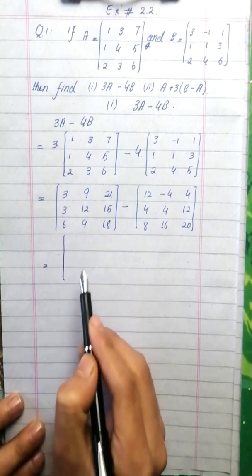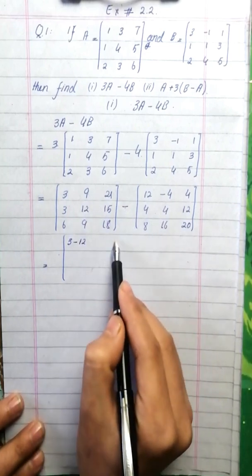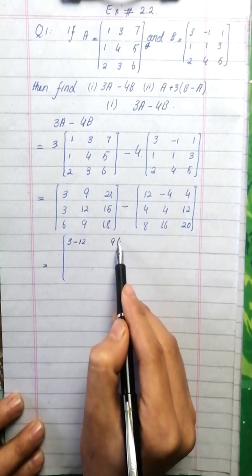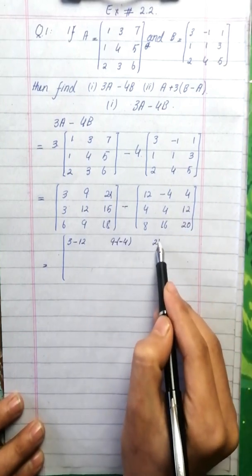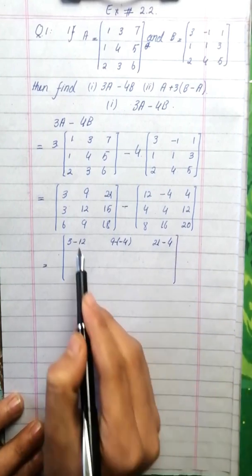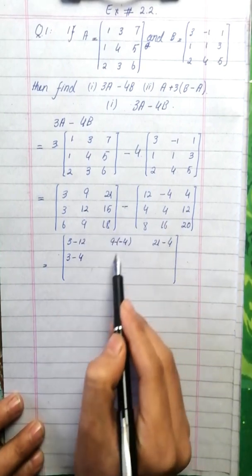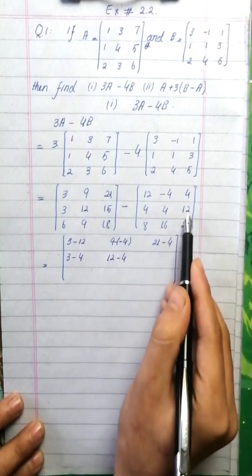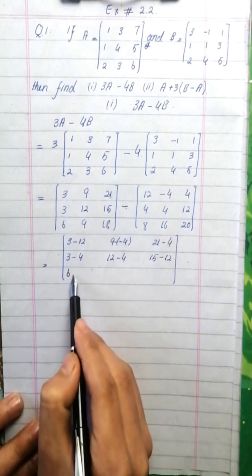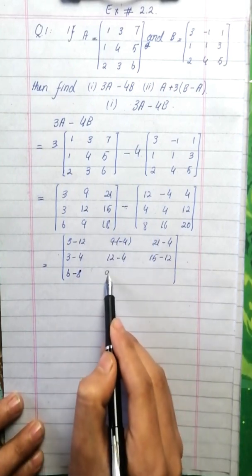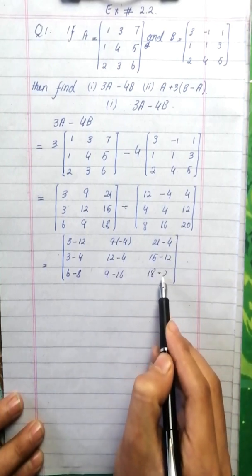Element-by-element subtraction: 3 minus 12, 9 minus minus 4, 21 minus 4, 3 minus 4, 12 minus 4, 15 minus 12, 6 minus 8, 9 minus 16, 18 minus 20.